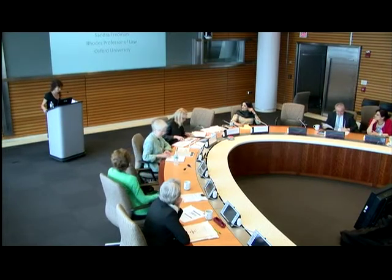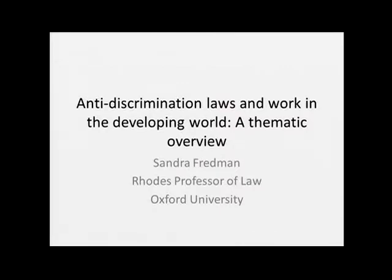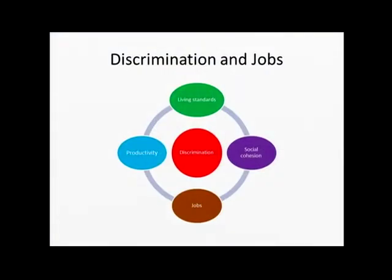Thanks to Dean, Benedict, and Will Bang for hosting the session. My background paper was on anti-discrimination laws and work in the developing world. The focus was to look at what kinds of laws there are, but also how we could design laws better to deal with anti-discrimination. It starts with the theme of the World Development Report on jobs, which was that jobs is the pivot of three themes: productivity, living standards, and social cohesion. We've already heard from the previous two speakers the ways in which discrimination can impact all of these things.